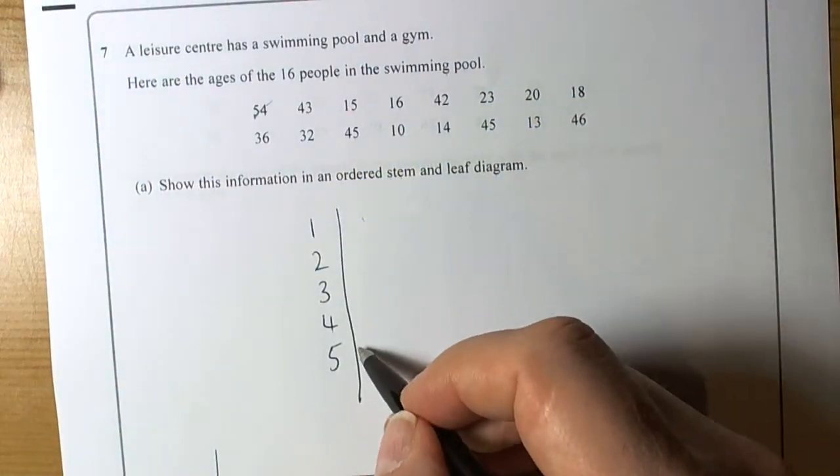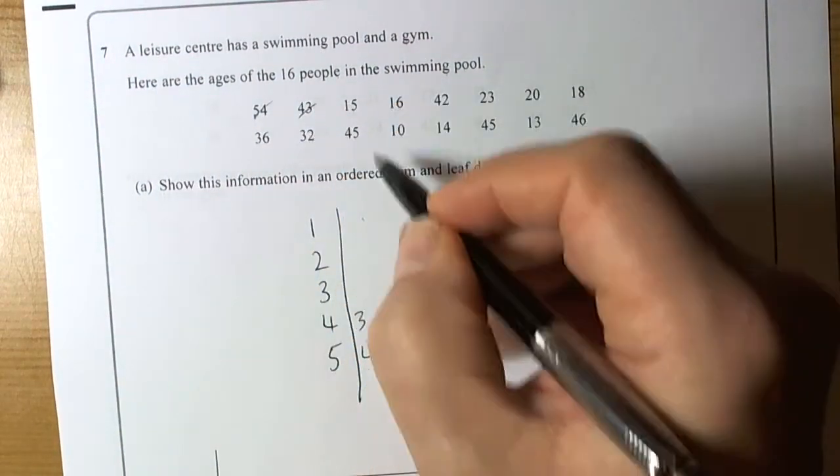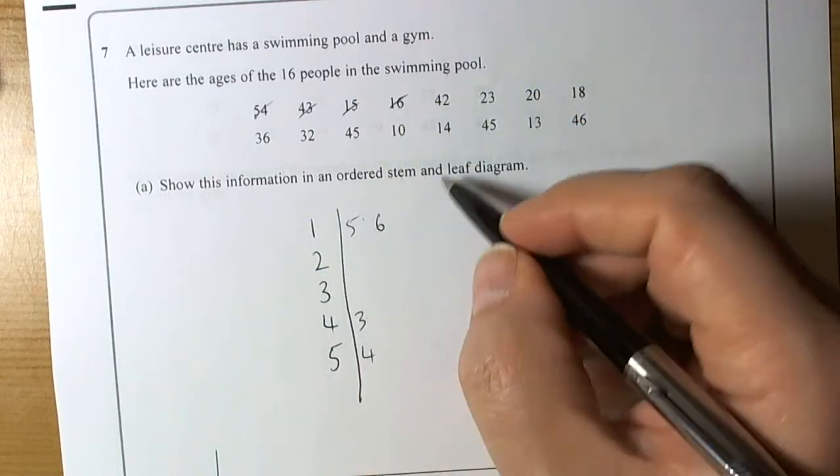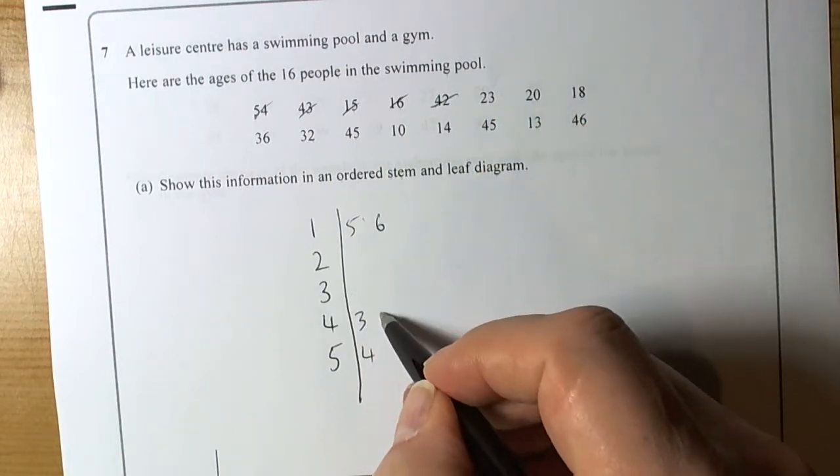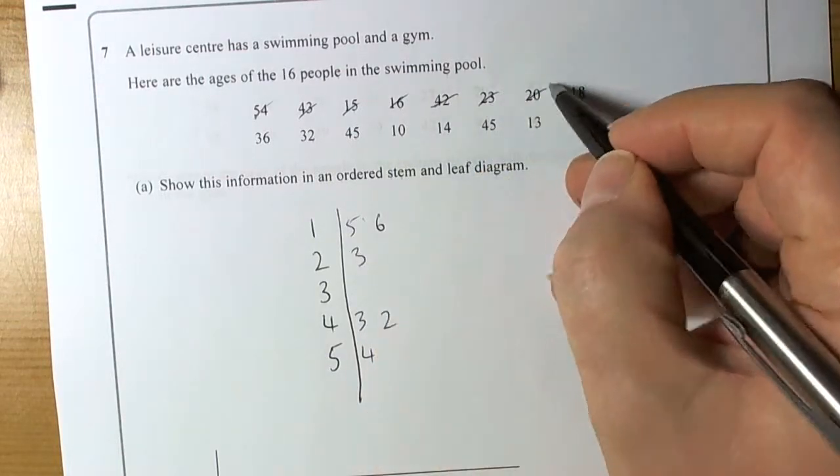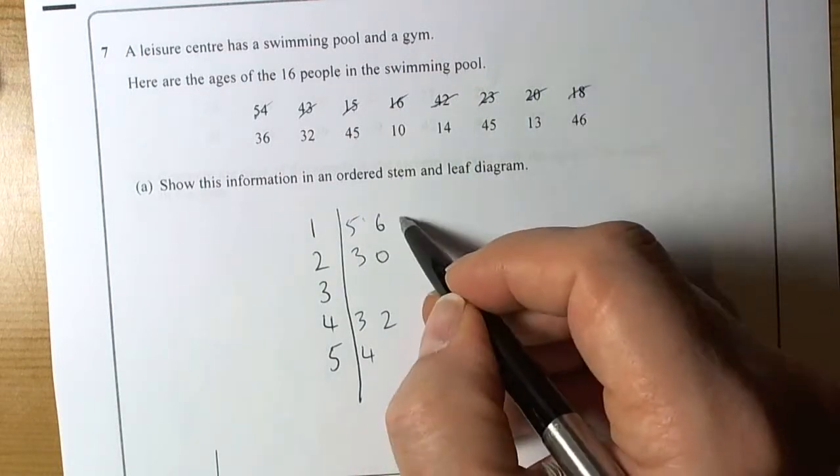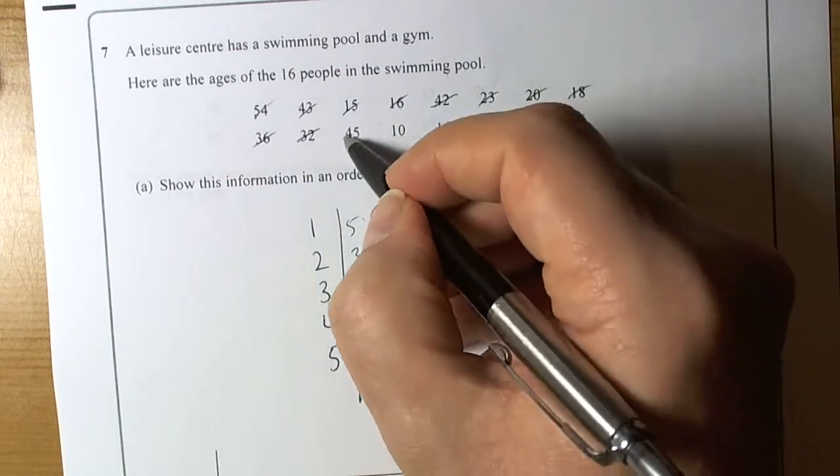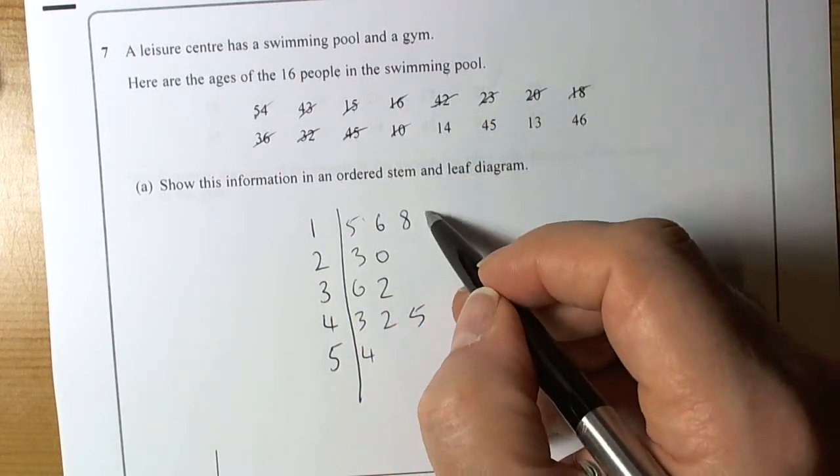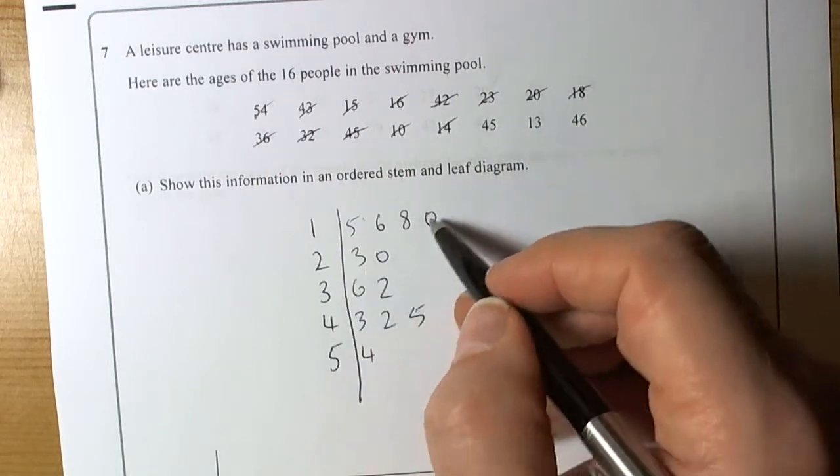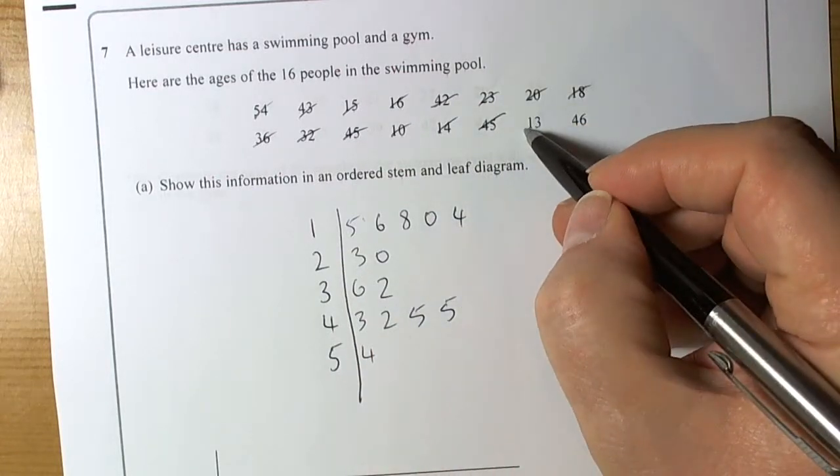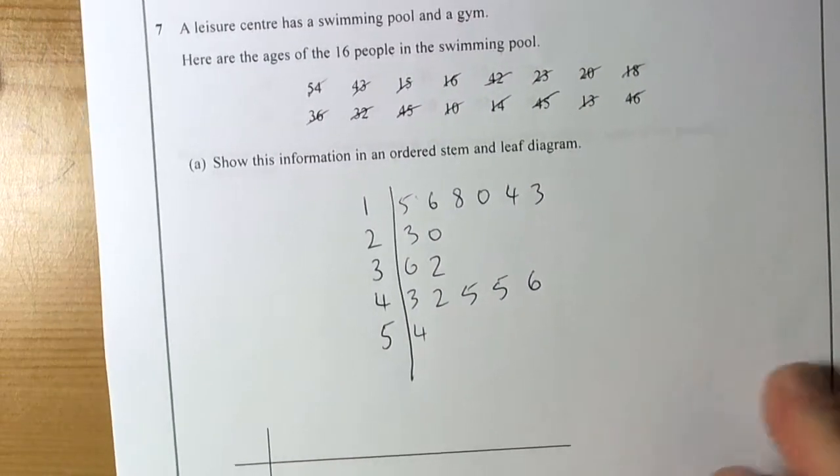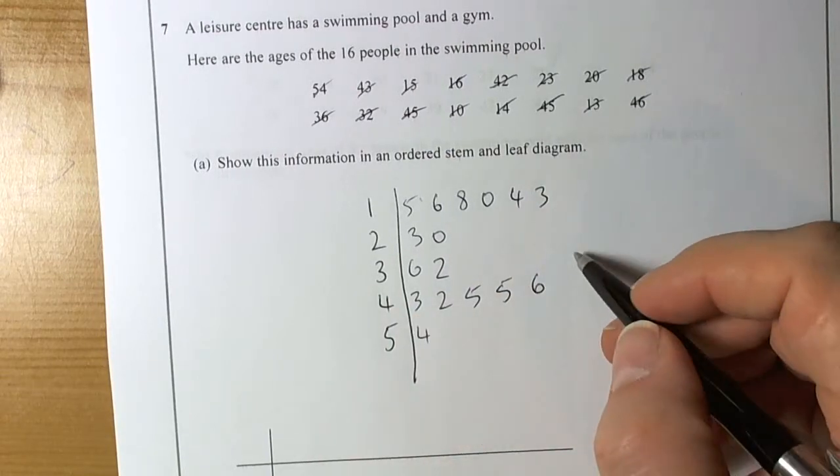So 54. Now we go through them one by one. So 54, 43, 15, 16. So what we'll do is put the units part on this one. So 42, 23, 20, 18, 36, 32, 45, 10, 14, 45, 13, 46. Okay. So that's our rough workings out. That's the unordered diagram.